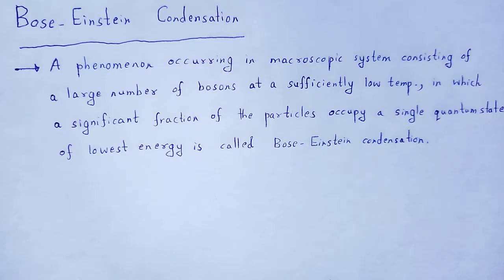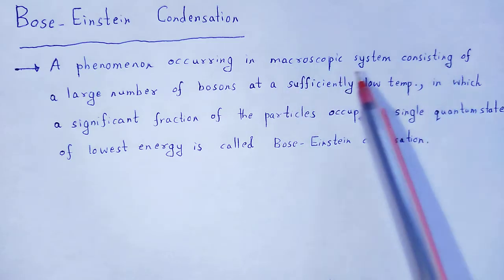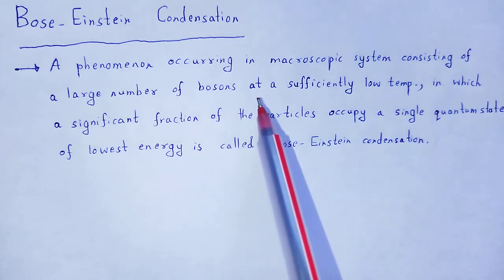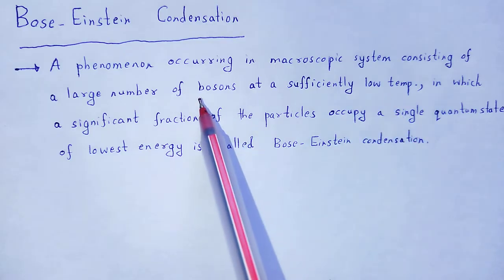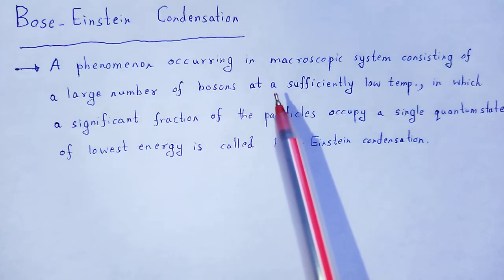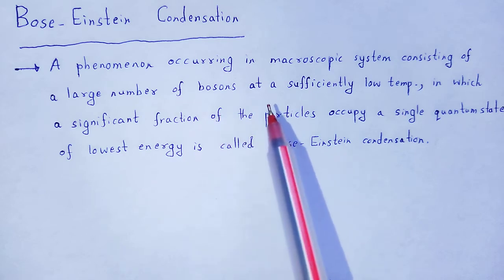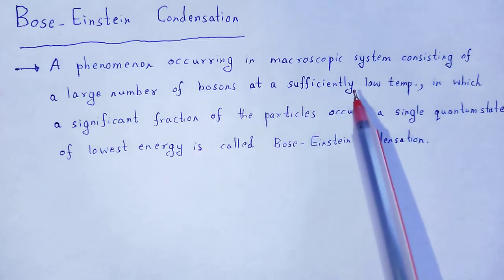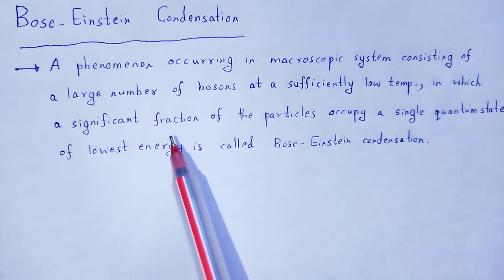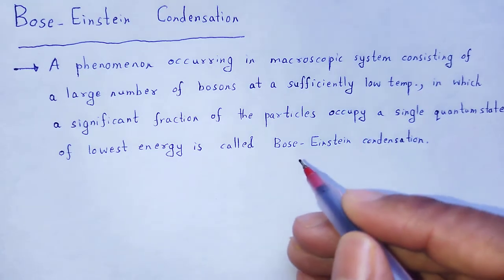Bose-Einstein condensation is the phenomenon occurring in a macroscopic system consisting of a large number of bosons. These bosons at a sufficiently low temperature — bosons are those identical indistinguishable particles which do not obey Pauli's exclusion principle, have zero or integral spin, and obey Bose-Einstein statistics — a significant fraction of the particles occupy a single quantum state of lowest energy. This is called Bose-Einstein condensation.